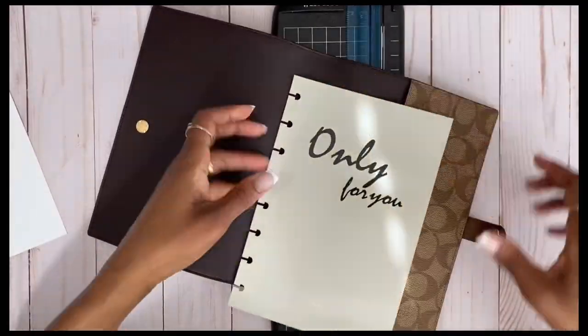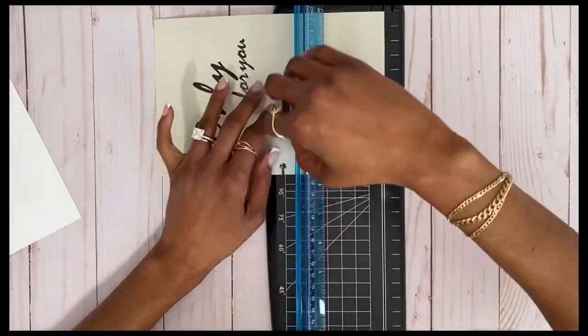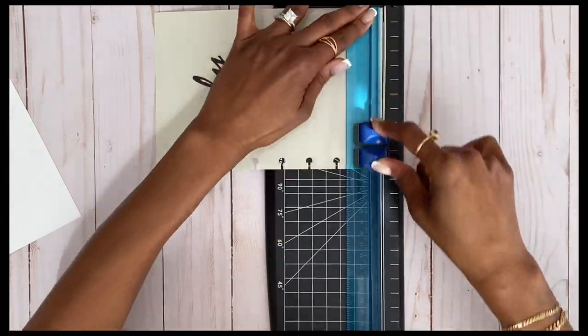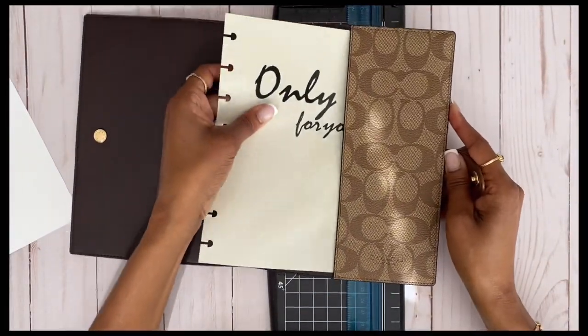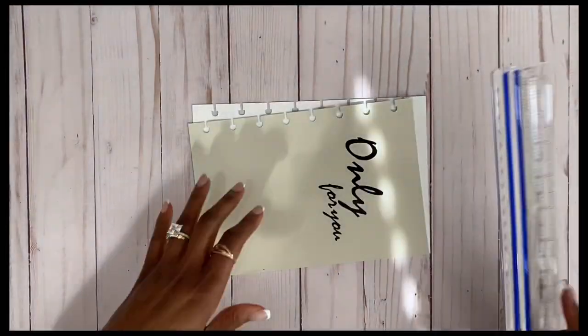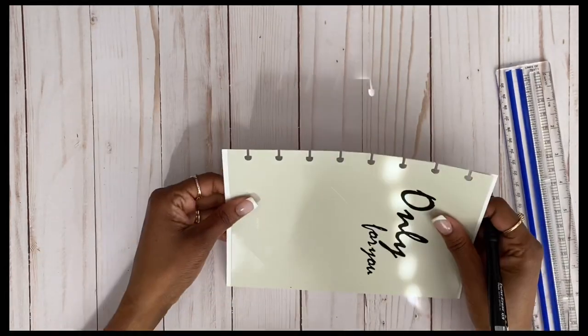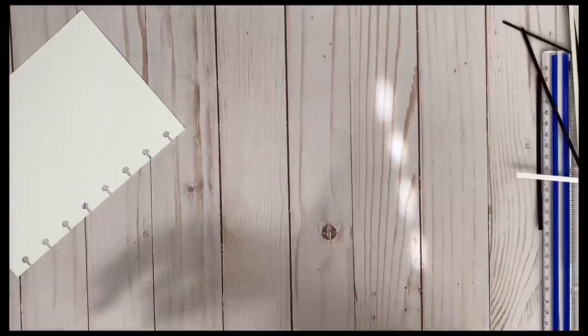You see me here checking. It's still a little too big, so I'm just going to take a little bit off of this one side. Now it fits great. I'm going to use that as the template to cut the back as well as some additional cardstock that I'm adding to give it a little bit more structure.